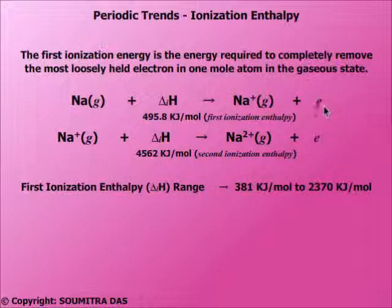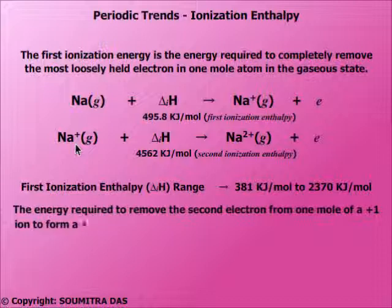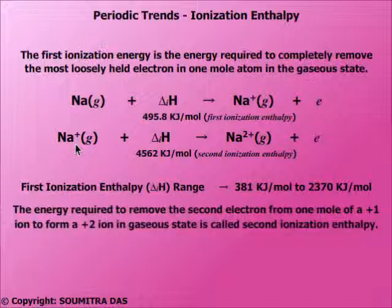Once the highest energy electron is removed, it requires much more energy to remove the next electron which has the highest energy. This is because this electron is more strongly bound to the nucleus, which now has an extra proton. The energy required to remove the second electron from one mole of a +1 ion to form a +2 ion in gaseous state is called the second ionization enthalpy.